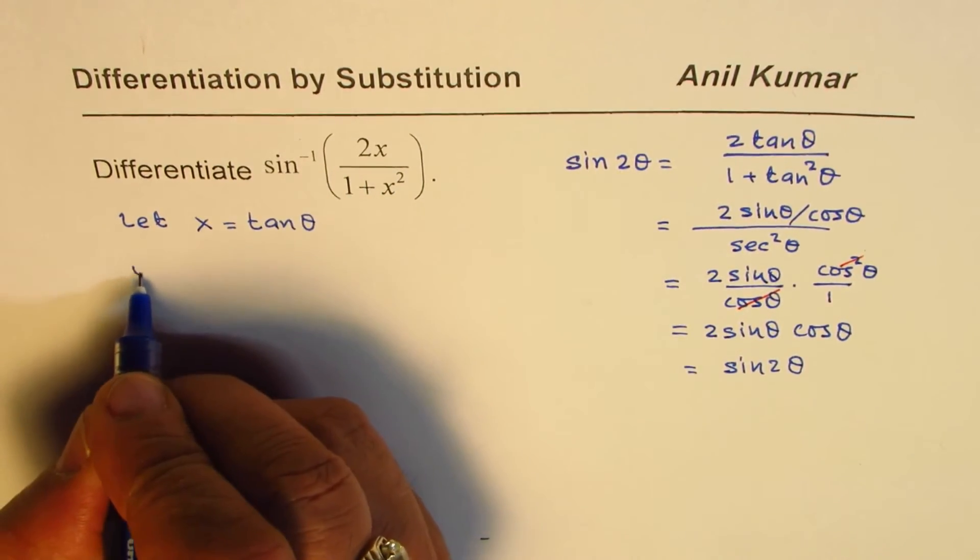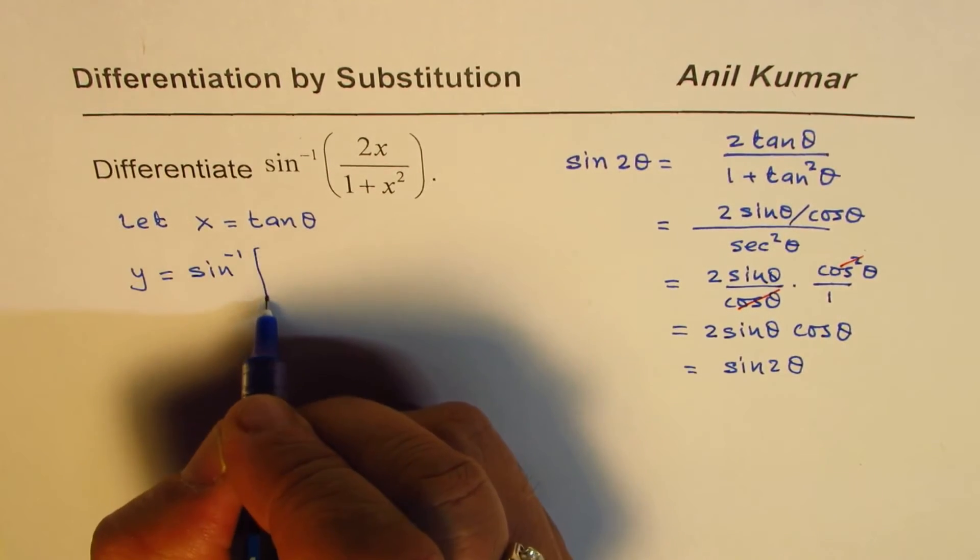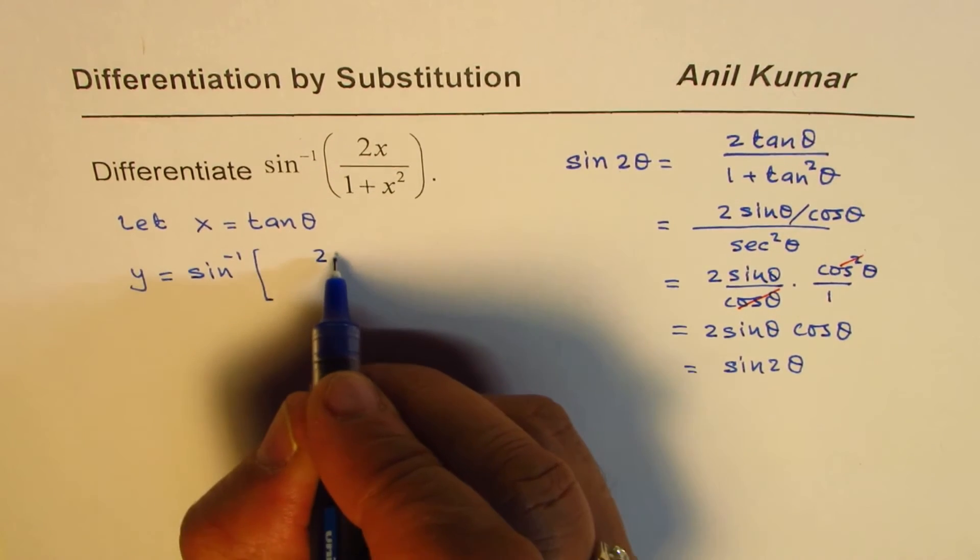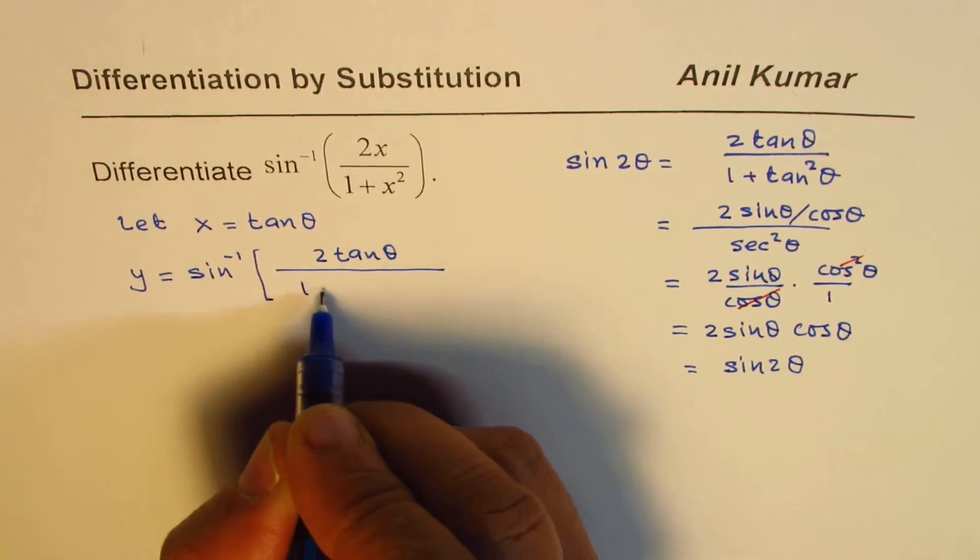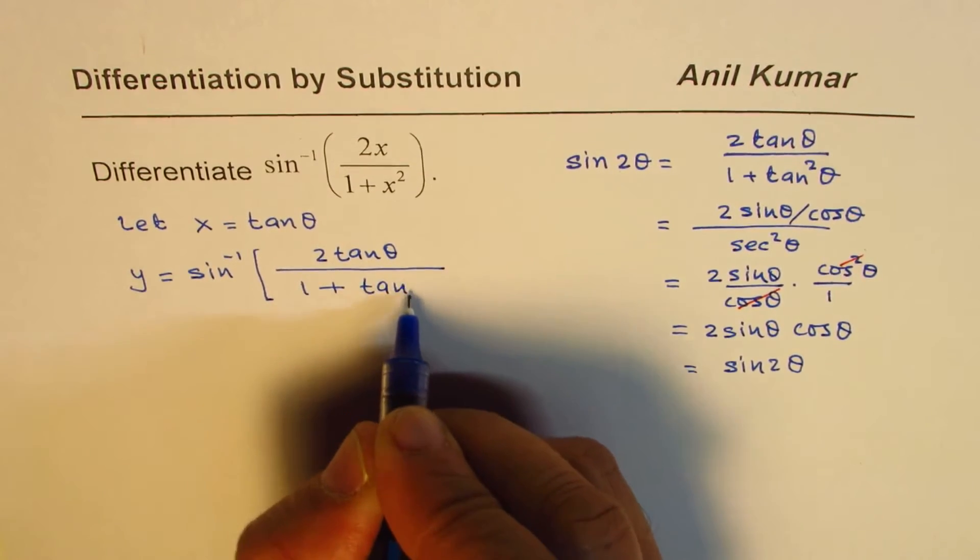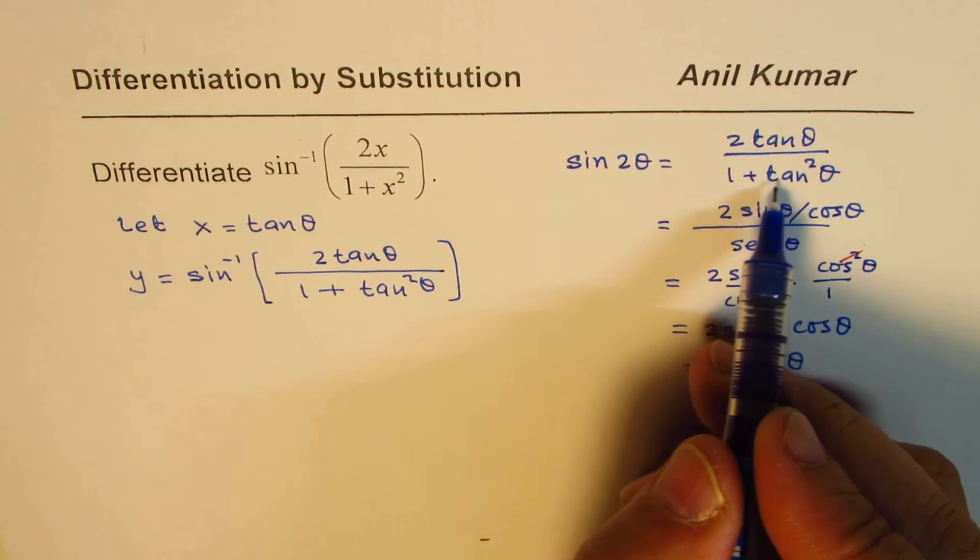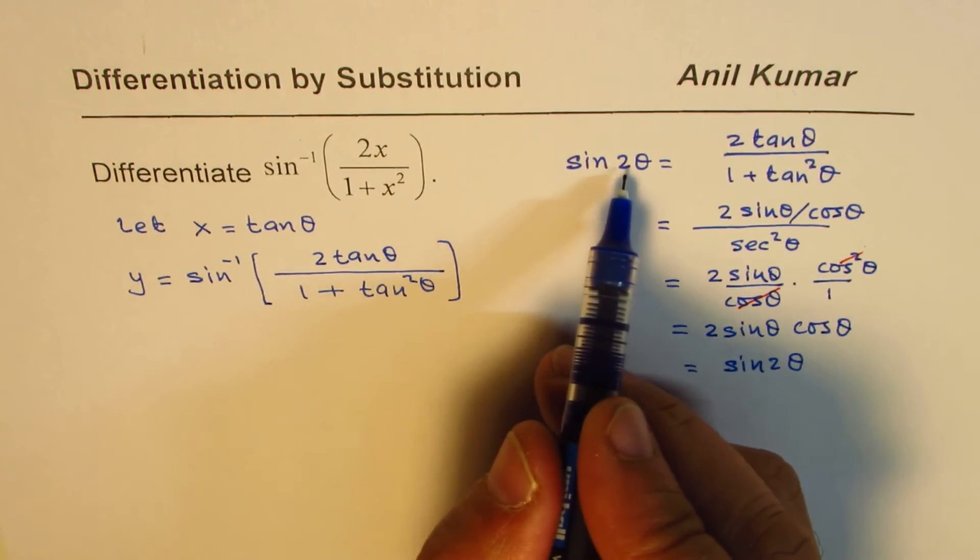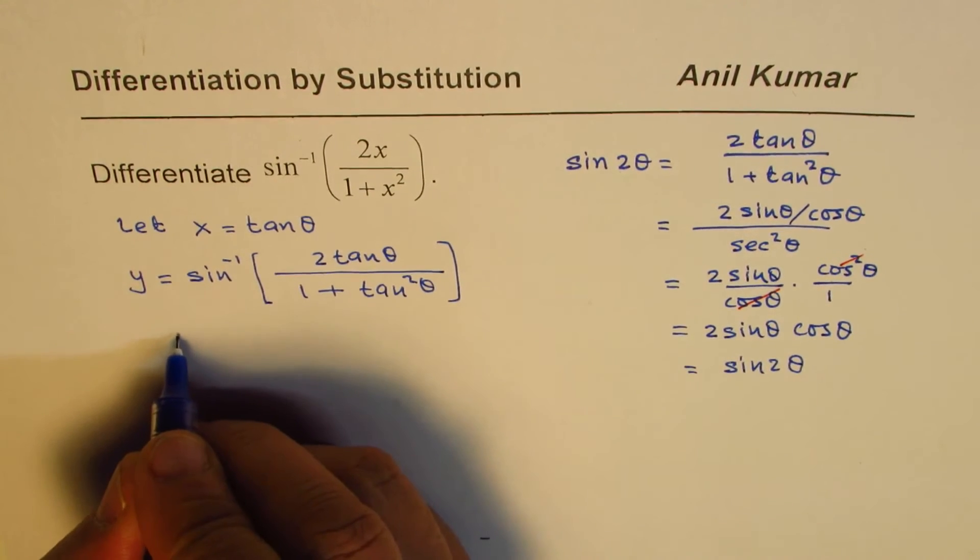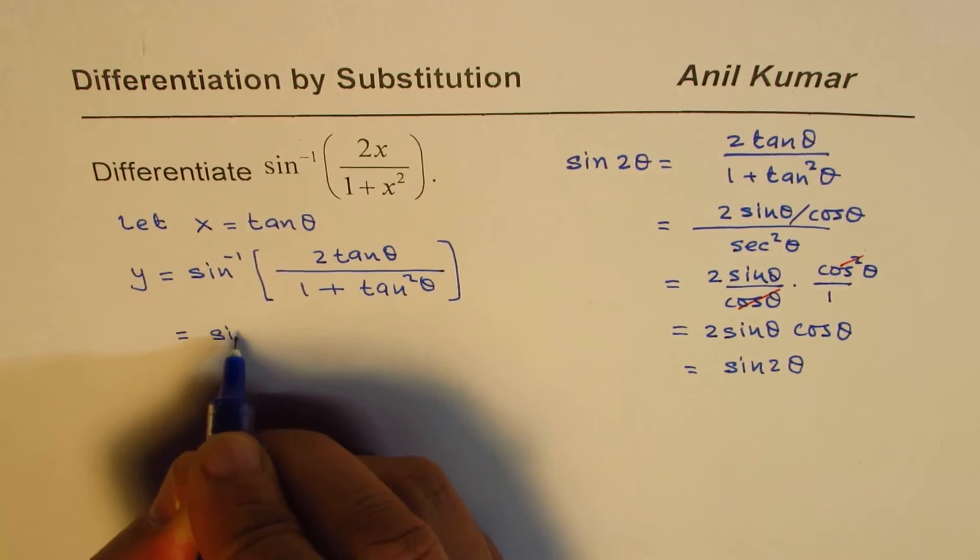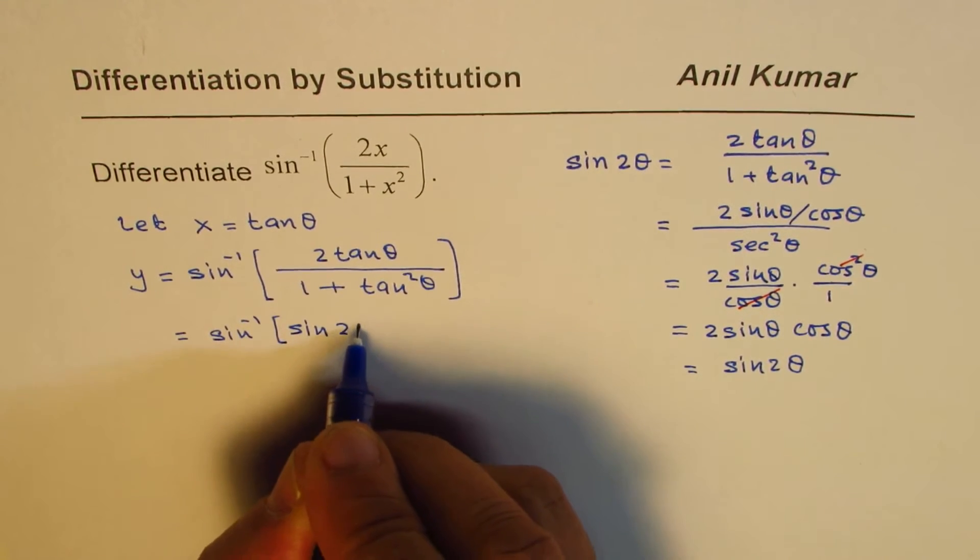We can write this function as y equals sine inverse of 2 tan theta over 1 plus tan square theta. This is sine 2 theta, as you have seen the derivation. So we'll write this as sine inverse of sine 2 theta.